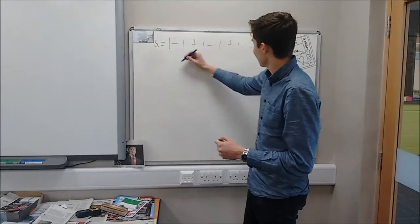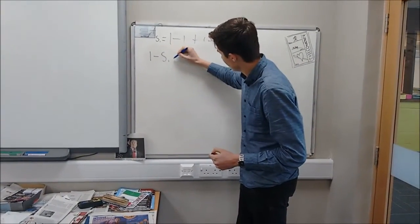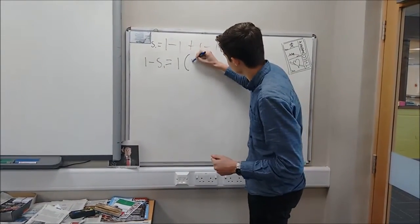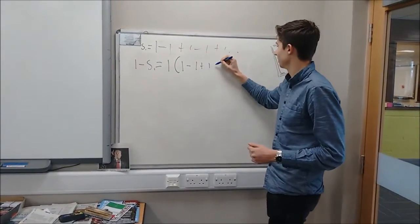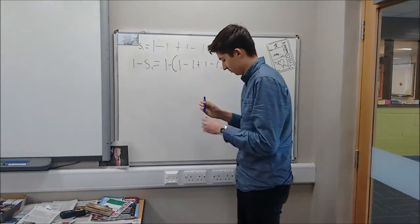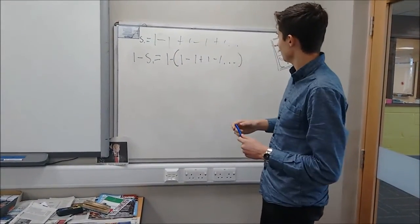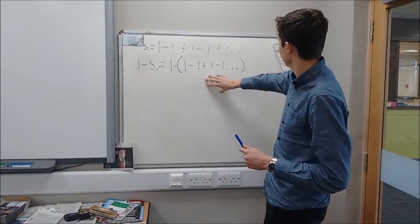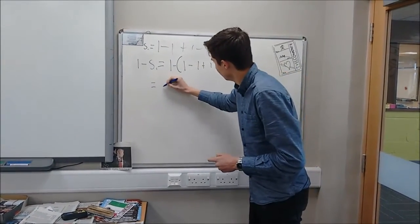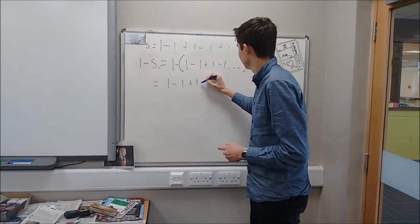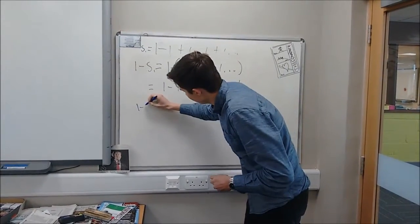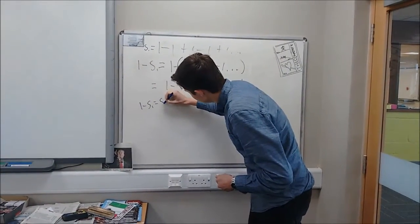If we were to write this as 1 minus S1, we could then do 1 under the whole series again: 1 minus 1 plus 1 minus 1, all the way to infinity. So we'll actually do this equals minus this. And so if you take away all this from this, you'll be left with the same series. And so if you're left with the same series, then 1 minus S1 equals S1.